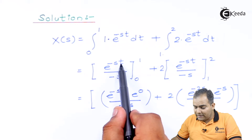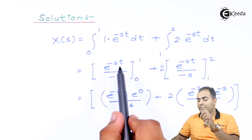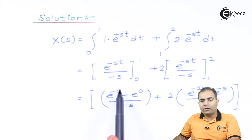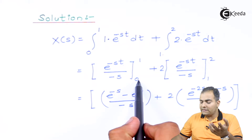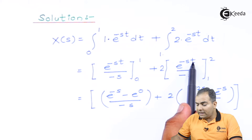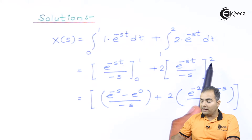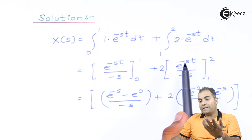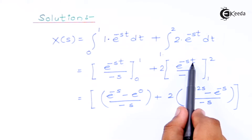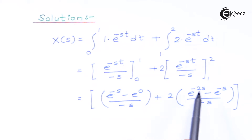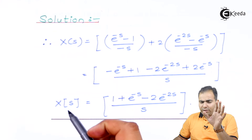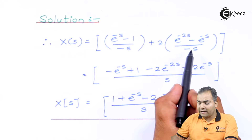For the first integral, substituting the upper limit t=1 gives e^(-s), and the lower limit t=0 gives e^0 = 1. For the second integral, the upper limit t=2 gives e^(-2s) and the lower limit t=1 gives e^(-s), with denominator minus s on both sides. You can take minus s common, or multiply numerator and denominator by minus one to clear the negative denominator.